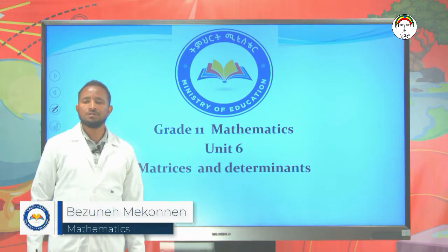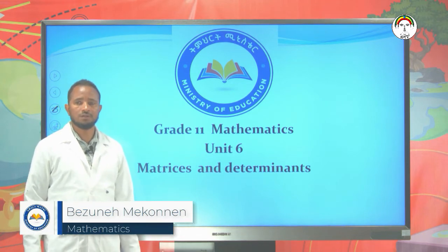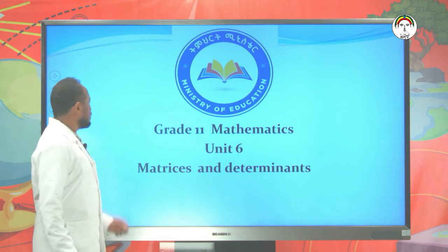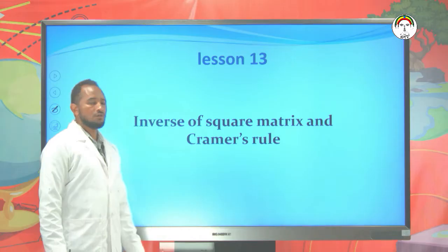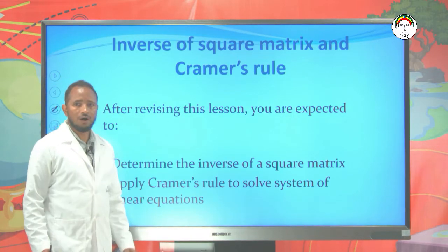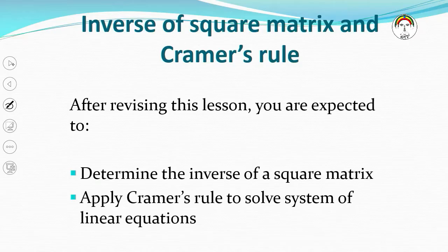Hello, dear students. This is a grade 11 mathematics lesson on Unit 6, Matrix and Determinants. Today we focus on the inverse of a square matrix and Cramer's rule. After revising this lesson, you are expected to determine the inverse of a square matrix and apply Cramer's rule to solve systems of linear equations.